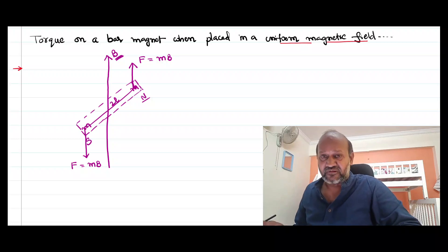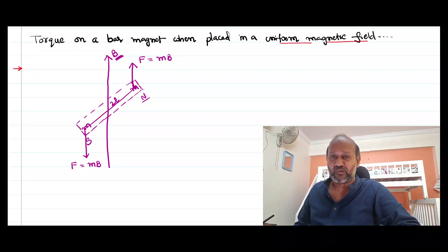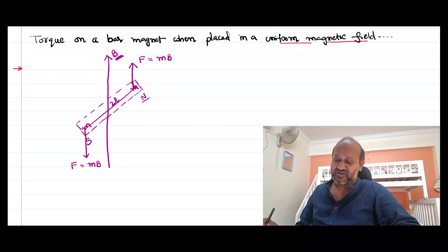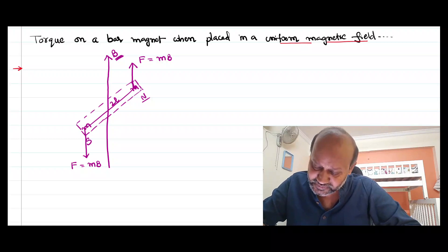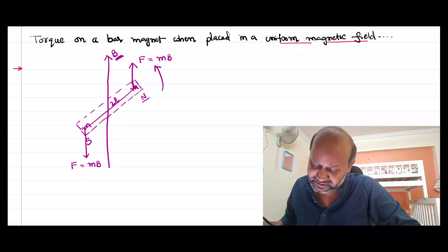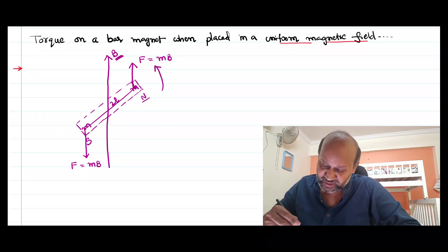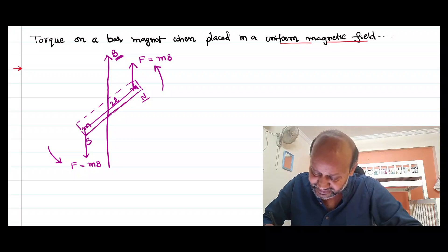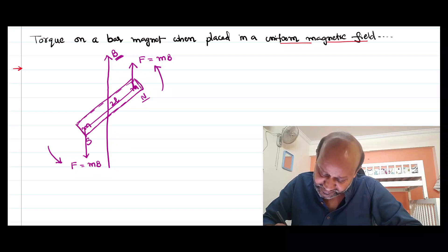So there are two equal forces acting on two different points of the bar magnet, which constitutes a couple. Two equal forces acting in opposite directions on two different points of a body constitutes a couple. So the north pole experiences a force and tries to turn one way, and this south pole experiences a force and tries to turn the other way. As a result, you can see the magnet tilted and making some angle with the magnetic field.